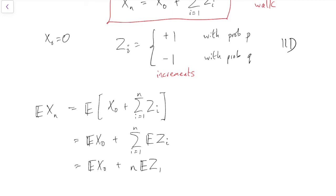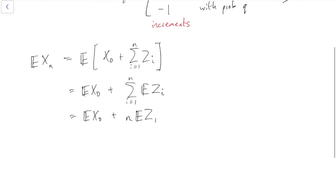So if you give me a starting distribution X0 and some increments distribution for the Z's, I can tell you what the expectation of Xn is. It follows this formula here. Note that we didn't actually use independence there. We just used the identically distributed bit and the linearity of expectation.